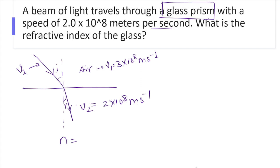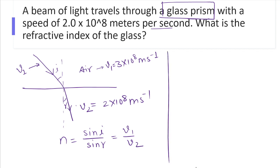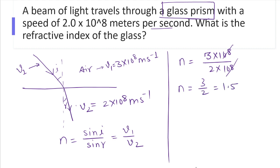Now let us find the refractive index. We can write the formula as n = sin I / sin R, but we don't need that here. Instead, I will use n = V1 / V2, the speed of light in the first medium divided by the speed in the second medium. Substituting, n = 3 × 10⁸ / 2 × 10⁸. The 10⁸ cancels, leaving n = 3/2 = 1.5. So the refractive index of the glass prism is 1.5.